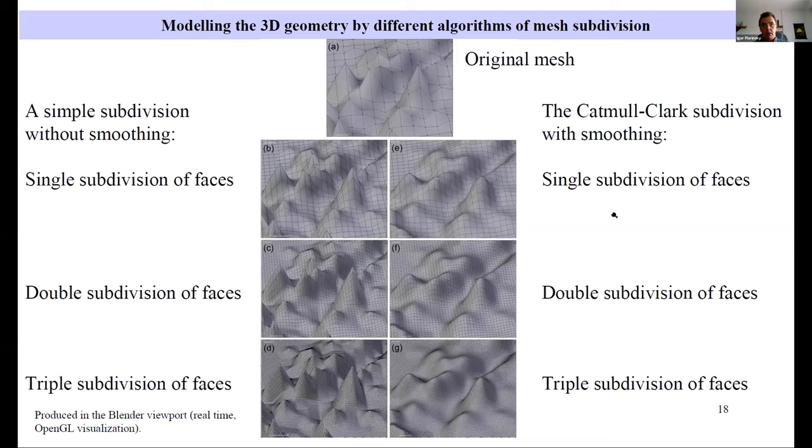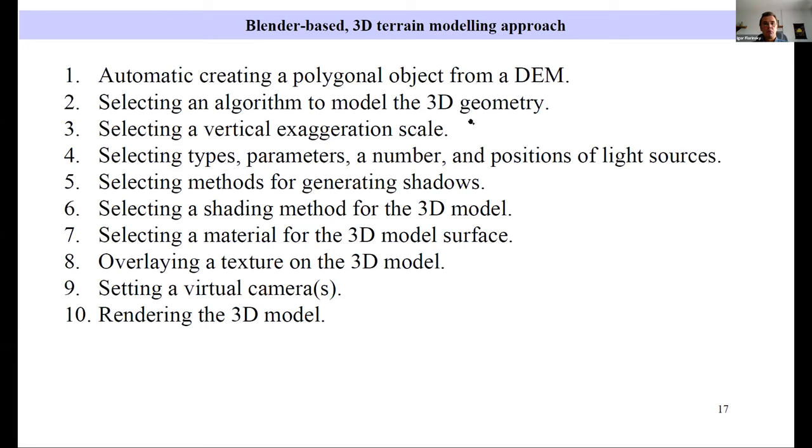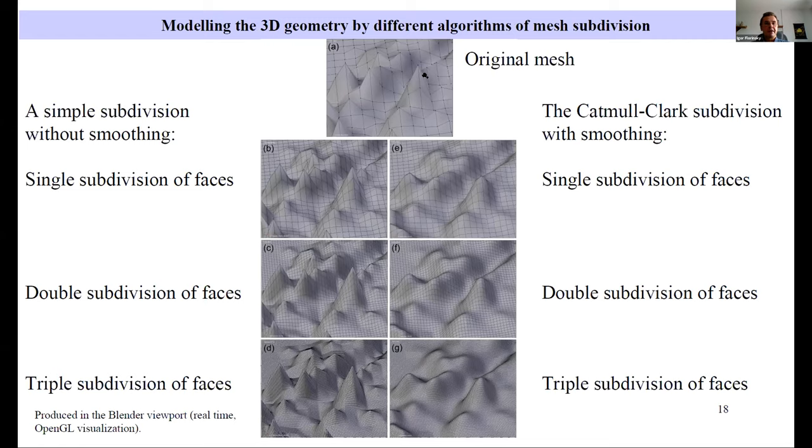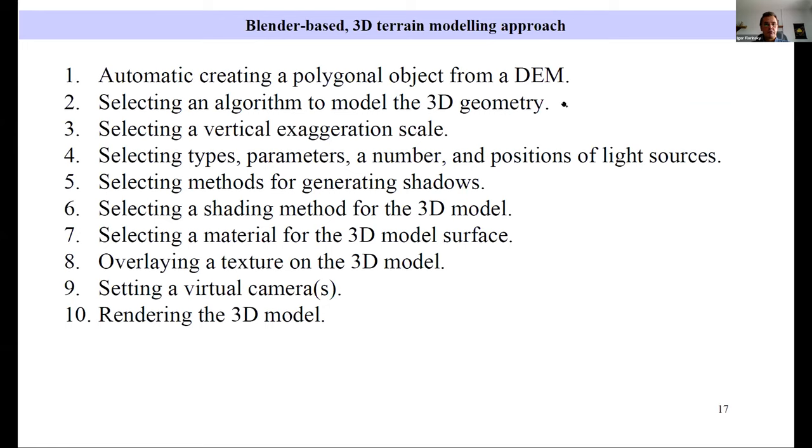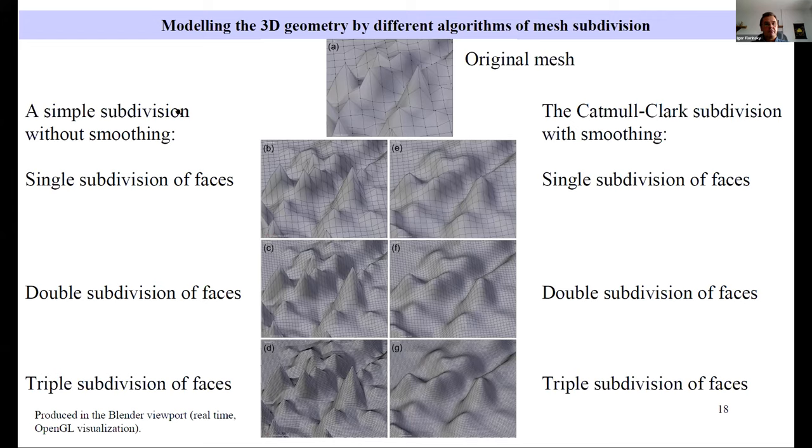Here you can see examples for selecting an algorithm to model the 3D geometry. Here you can see original mesh, example of original mesh, and two possible ways to model 3D geometry. Simple subdivision without smoothing and the Catmull-Clark subdivision with smoothing. And you can compare results of single subdivision, double subdivision, and triple subdivision of faces with and without smoothing. It's obvious that smoothing is better.